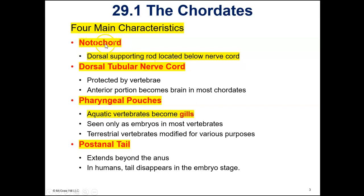The phylum chordata all have a notochord. All of them have a dorsal tubular nerve cord — remember that the earthworm had a ventral solid nerve cord. So all of the chordates have a dorsal tubular nerve cord; we call it our spinal cord. And almost all of them have that nerve cord protected by vertebrae.